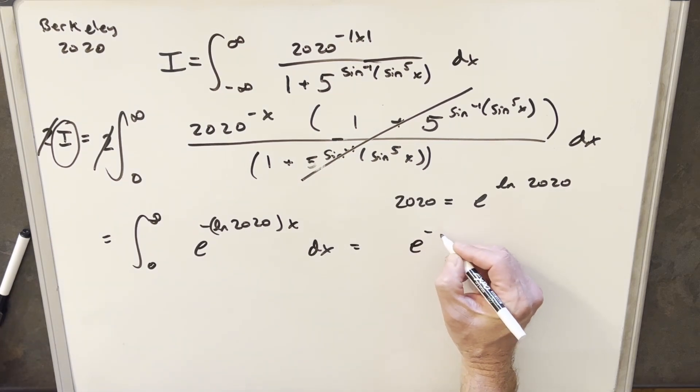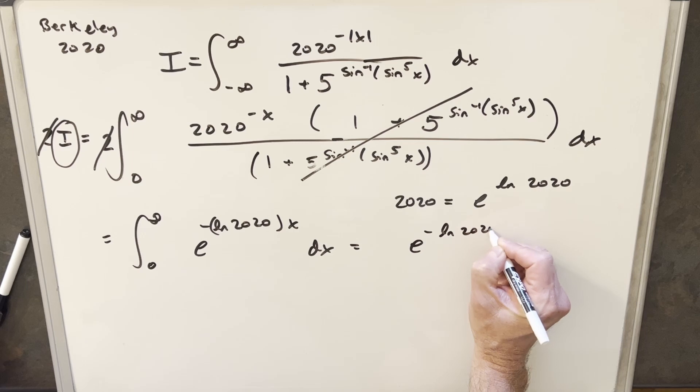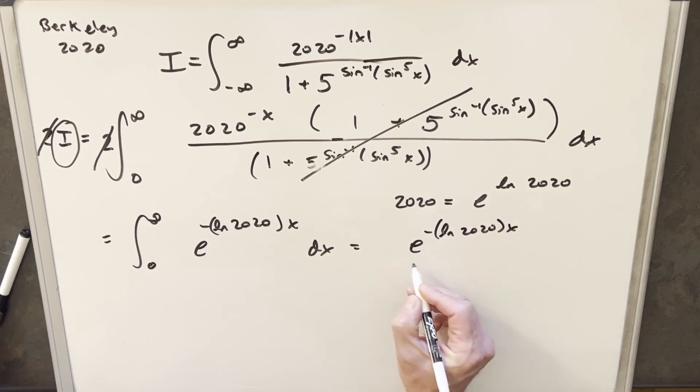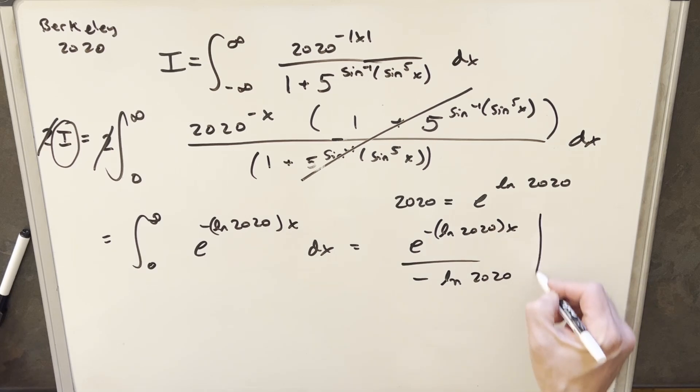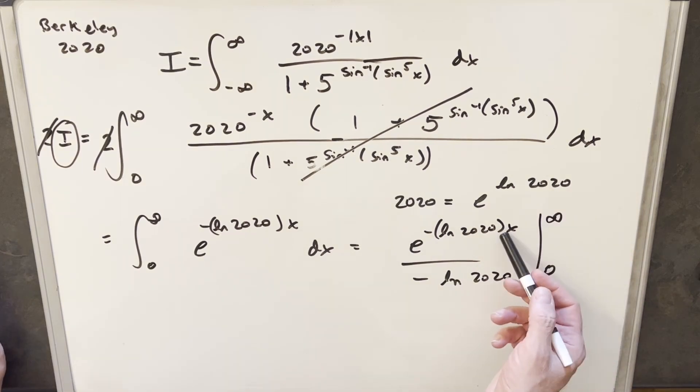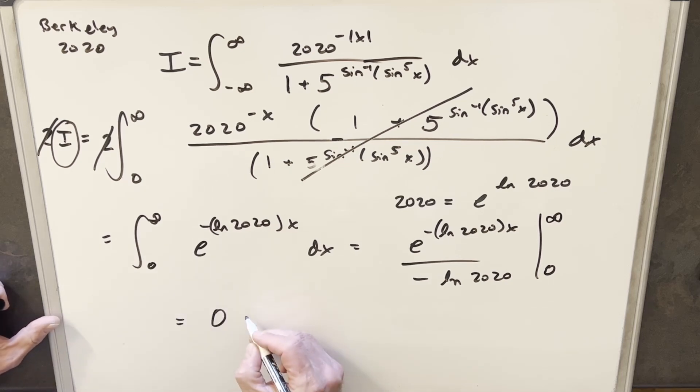So the integral of this is going to be just e minus ln 2020 x. And we just need to bring this whole thing into the denominator. And then we're just going to evaluate from 0 to infinity. So then when we plug infinity in here, because we have the minus sign, we're going to have essentially e to the minus infinity. Well, that's going to 0. So our first piece is just going to be 0.